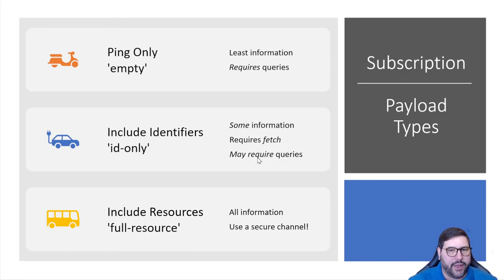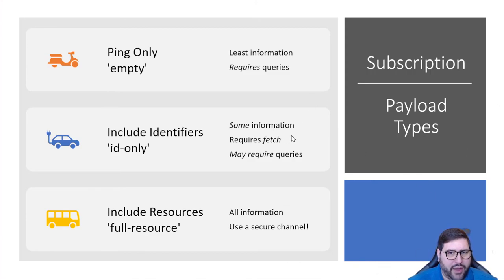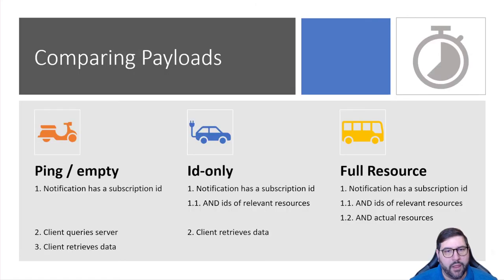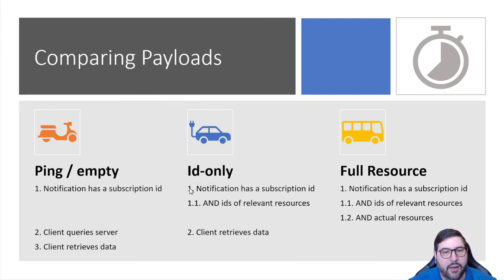The next level up is ID-only: the notification actually has the identifiers for the resources — for example, it'll say it's encounter 2022-110, patient 1234, at facility ABC. So the client just fetches those specific resources rather than running a query. Or you can go all the way to full resource, where the notification includes the resources themselves and the client won't need to ask for information again. Comparing the three: with a ping there are three steps — notification, client queries server, client retrieves data; with ID-only the client just retrieves; with full resource the client doesn't even have to do that.